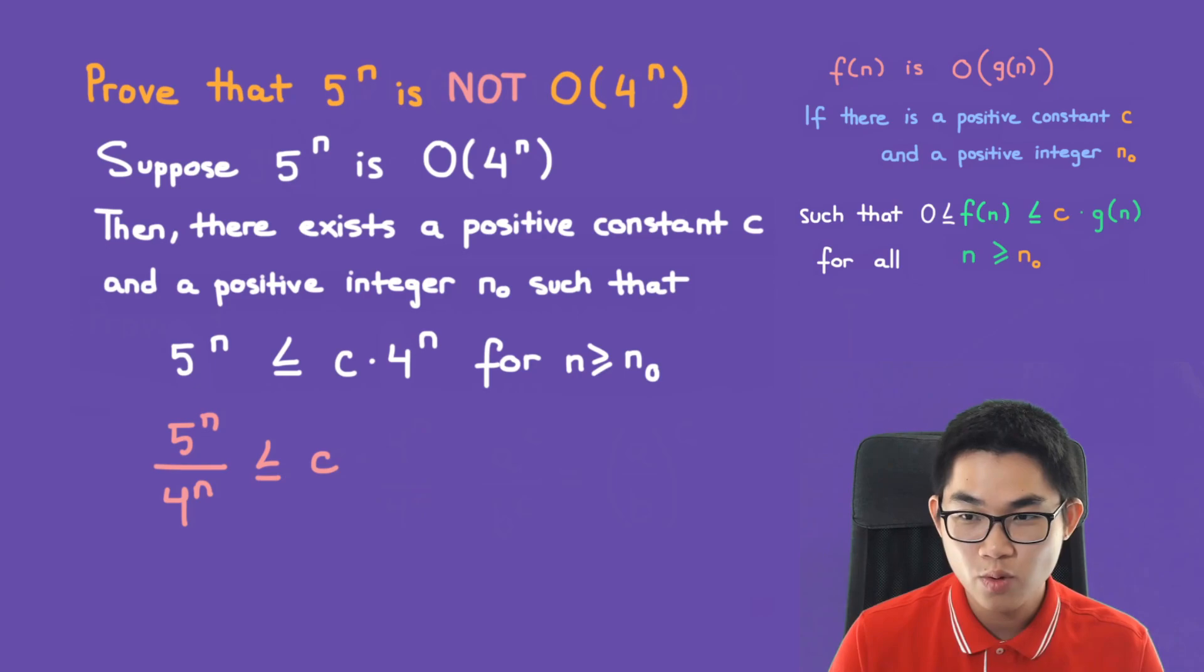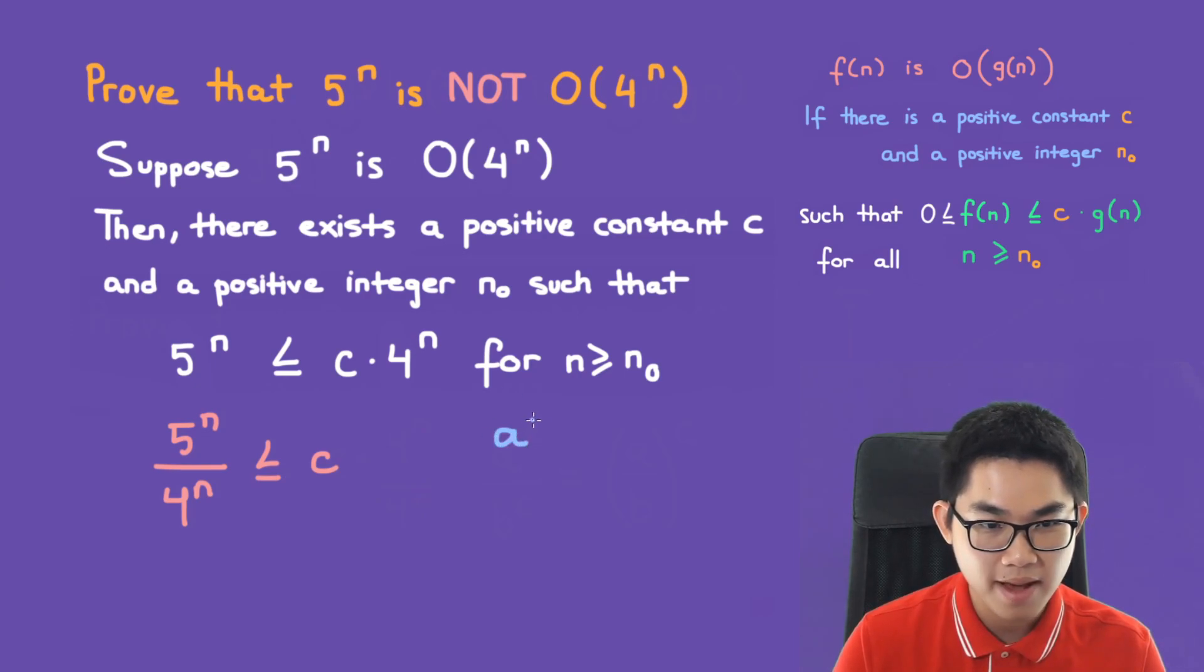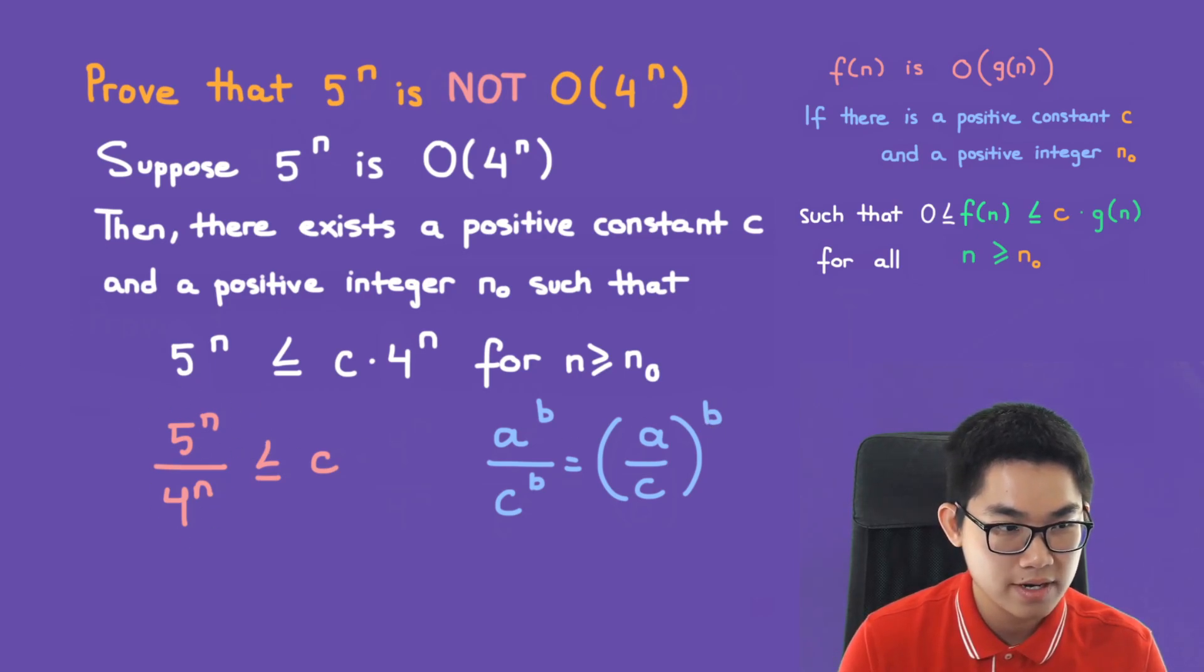Now there is a rule that says if you have a to the power of b over c to the power of b, then you will have a over c and the entire thing to the power of b. Let's transform this one using the rule.